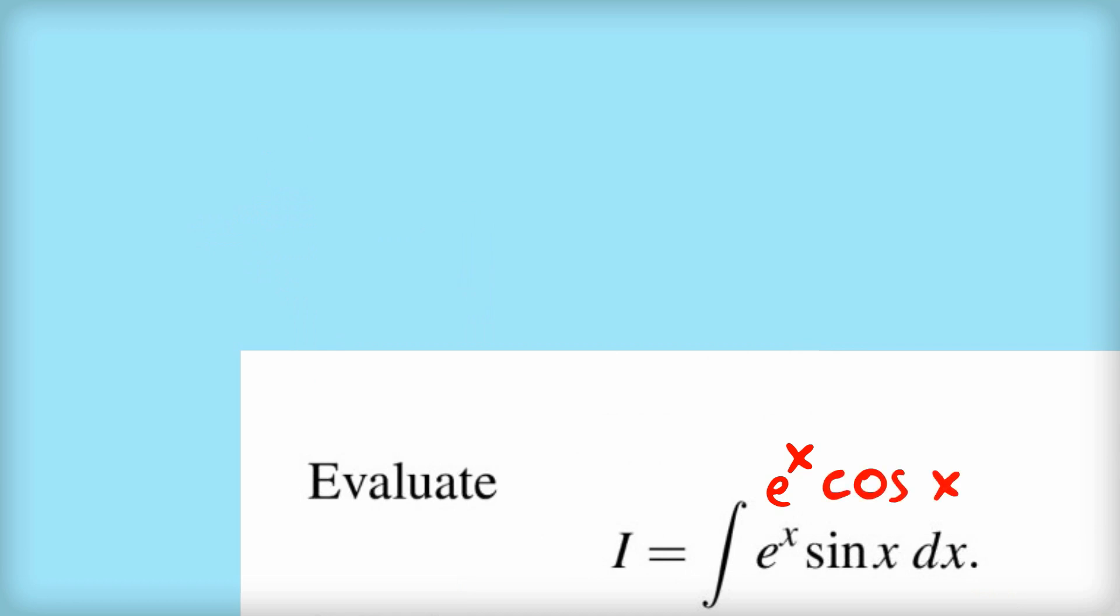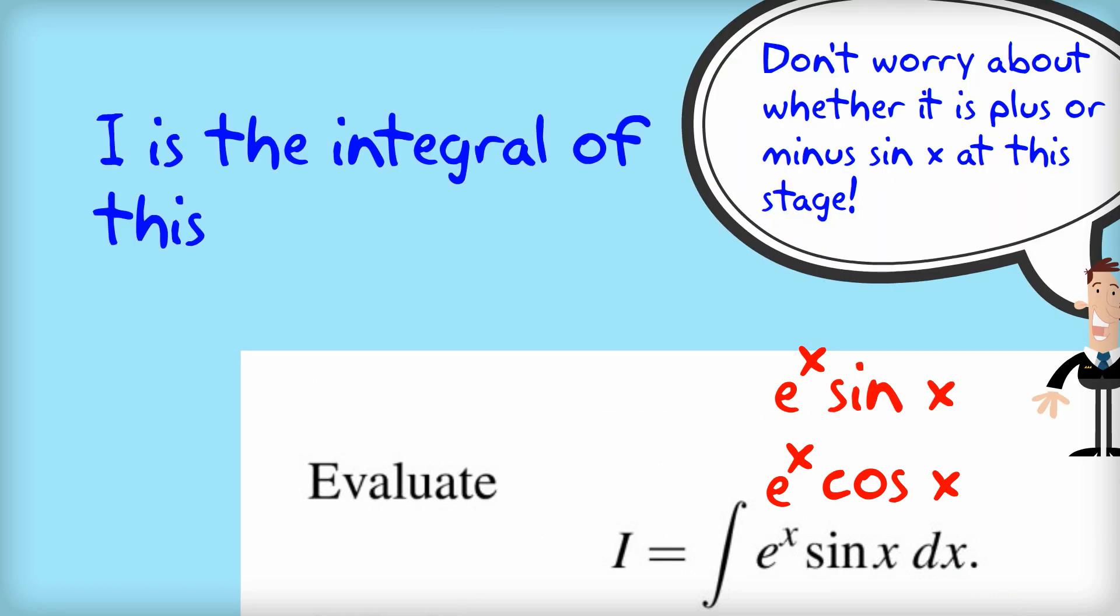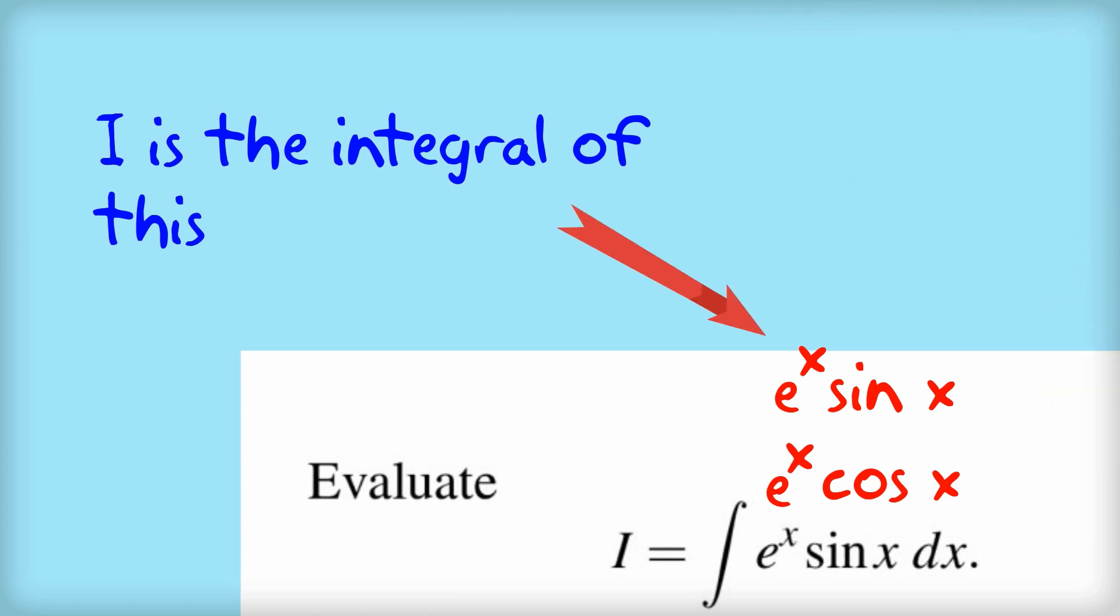What happens if I do it again? Well, I'll get e to the x times sine x. And that's the original problem. That's what I is, e to the x sine x. So maybe there's something that works there for us. So let's do the integration by parts twice and see what happens.